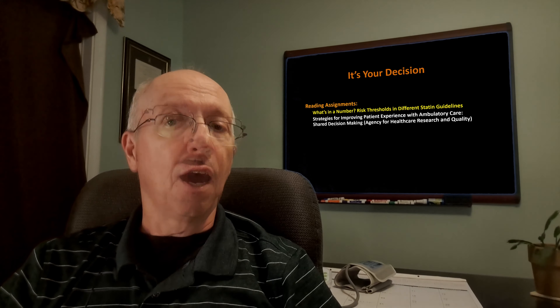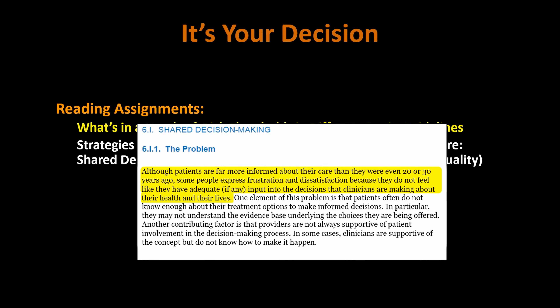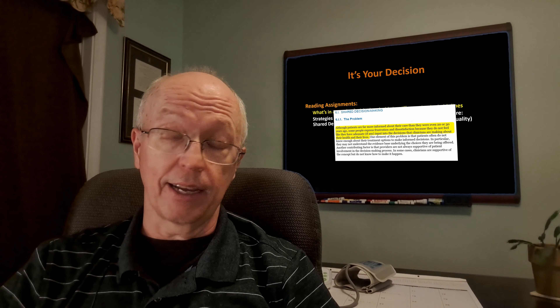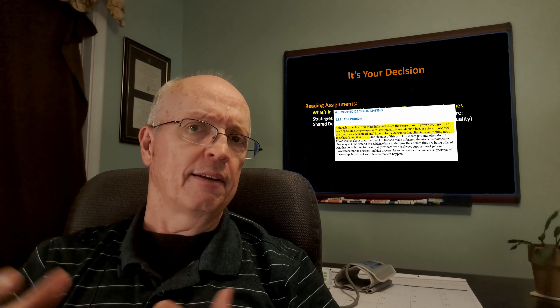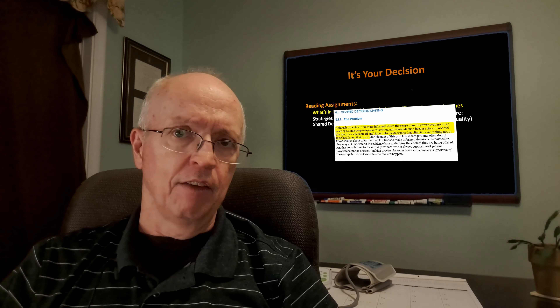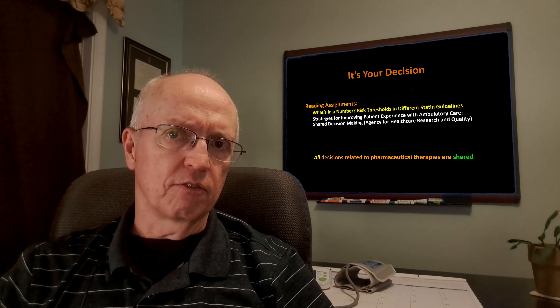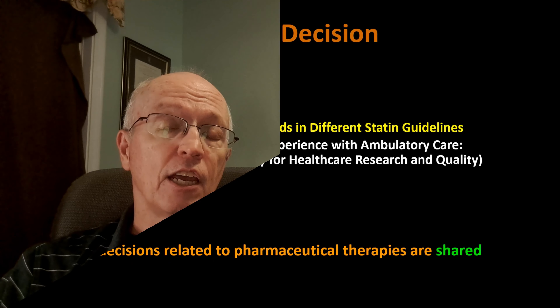The next one is a handbook put out by the Agency for Healthcare Research and Quality, a U.S. government agency — the handbook of strategies for improving patient experience with ambulatory care. I'm most interested in section 6i on shared decision making. Although patients are more informed than 20 or 30 years ago, some express frustration because they don't feel adequate input into decisions clinicians are making. The assumption is that clinicians are making the decisions and patients are allowing that.